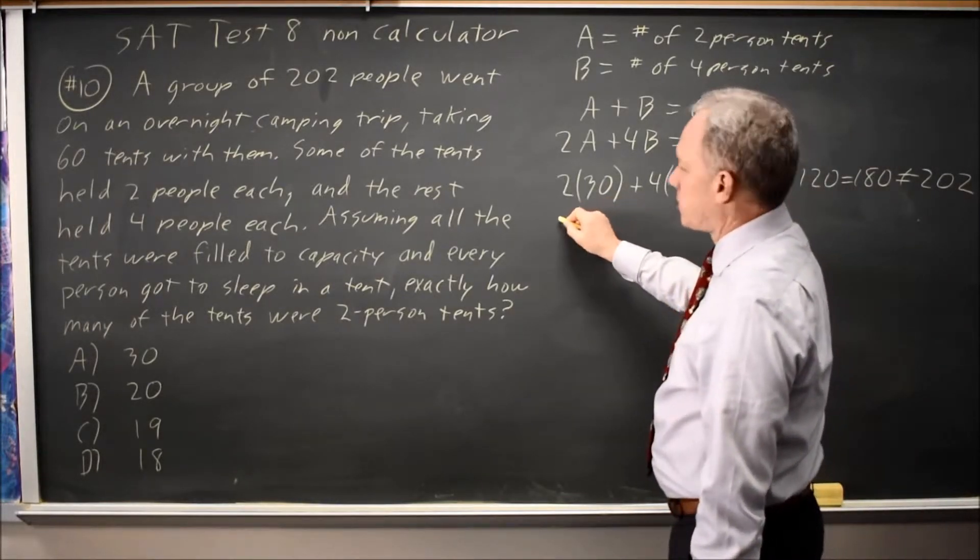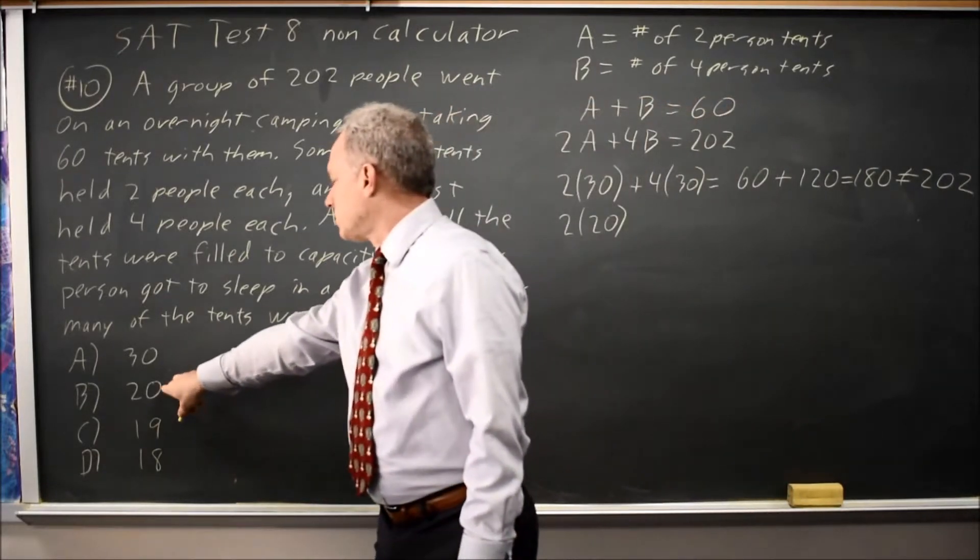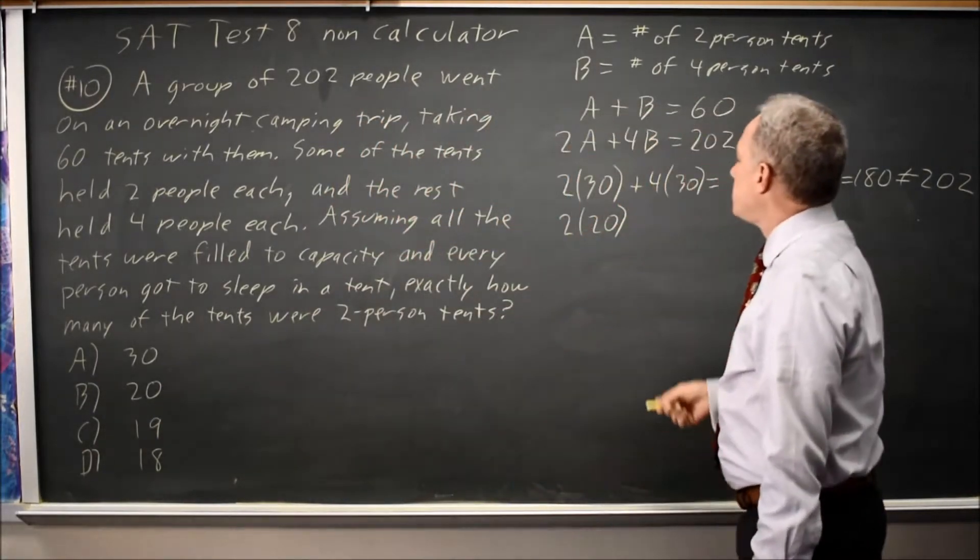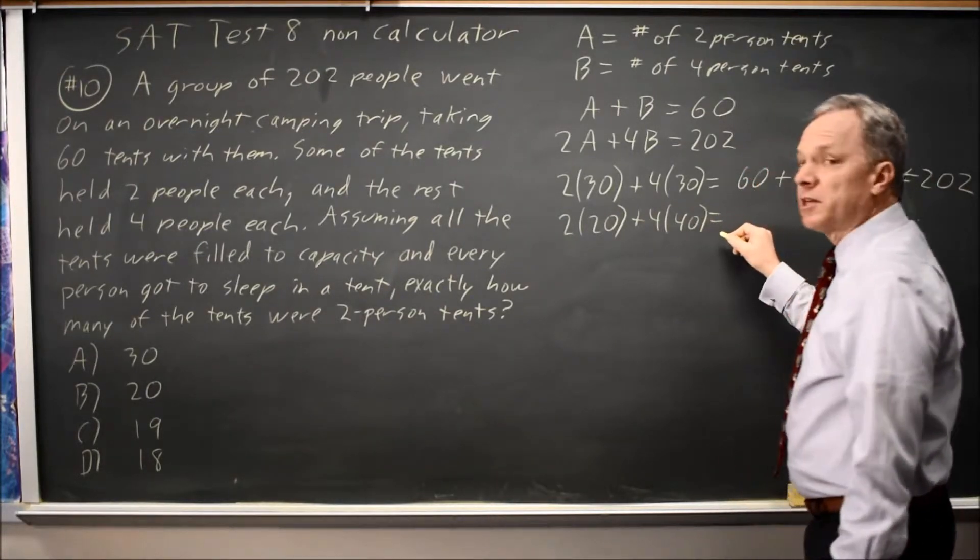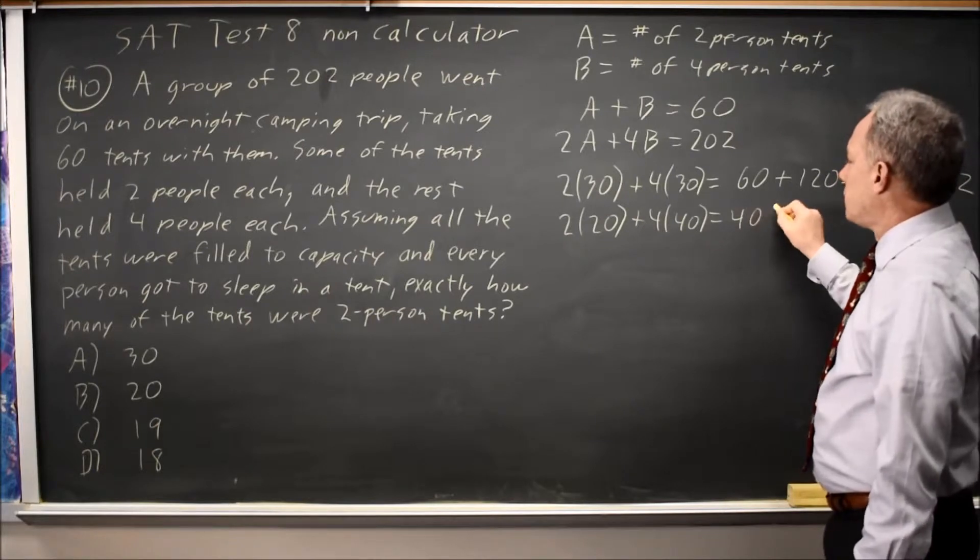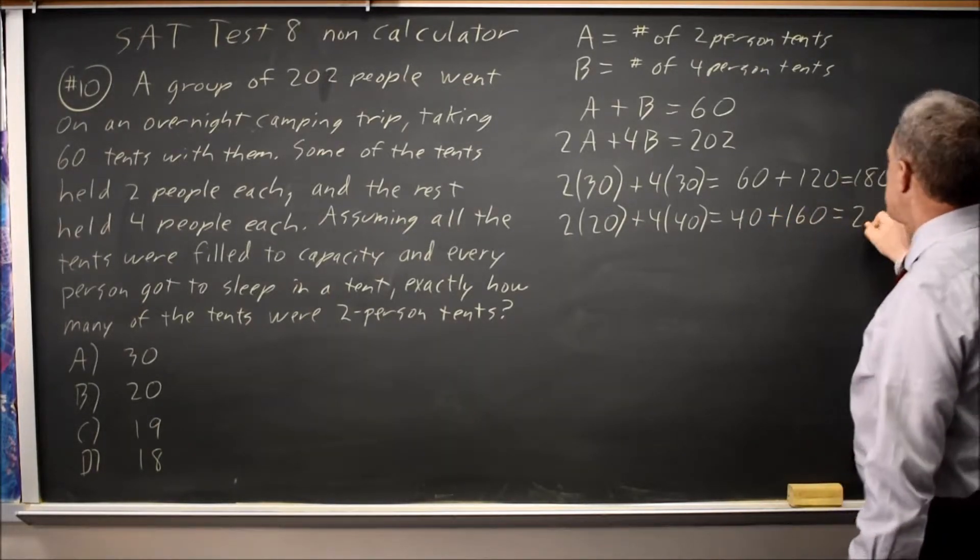So let's try the second choice, twice 20, because two-person tents is the answer choice, so I'm trying choice B, plus four times 60 minus 20 is 40. Two times 20 is 40, four times 40 is 160, 40 plus 160 is 200.